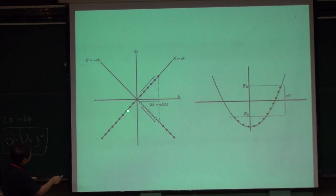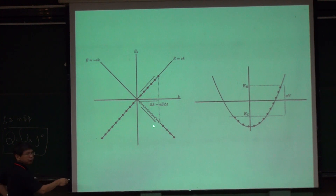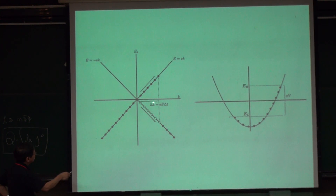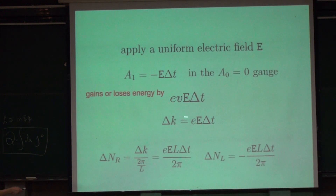So if you adiabatically switch on a background electric field, then the right-moving electron will pick up extra energy, and the left-moving electron will lose energy. Translated into the change in K, it will be delta K equal to charge times E times delta T.